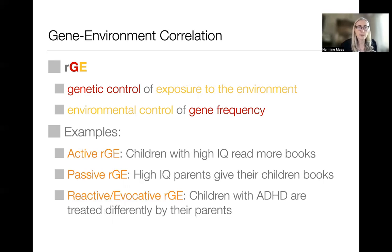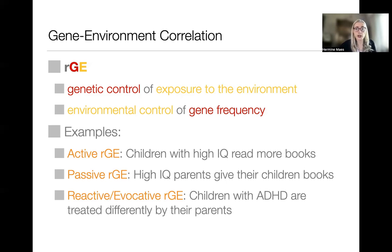It's important to distinguish gene-by-environment interaction from gene-environment correlation, which refers to either genetic control of exposure to the environment or environmental control of gene frequency. Examples fall into three types of rGE: when children with high IQ tend to read more books, that is active rGE; when high IQ parents give their children more books to read, that is passive rGE; and when children with ADHD are treated differently by their parents, this can be reactive or evocative rGE.